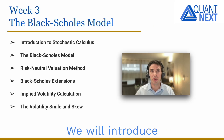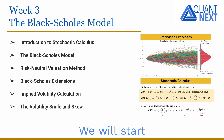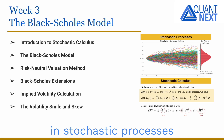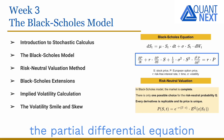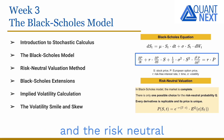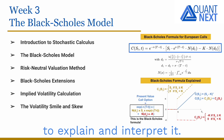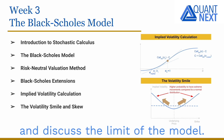We will introduce the famous continuous-time Black-Scholes pricing model in the third week. We will start with an overview of the key concepts and results in stochastic processes and stochastic calculus. Then we will discuss the partial differential equation and the risk-neutral martingale approaches for option pricing. We will derive the Black-Scholes formula and explain and interpret it, and show how to estimate the implied volatility from option prices and discuss the limits of the model.